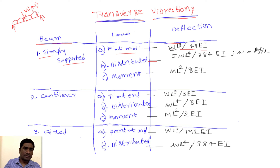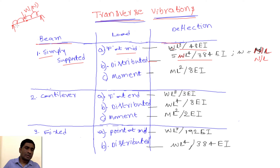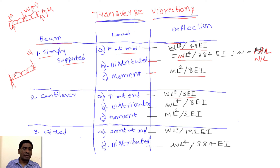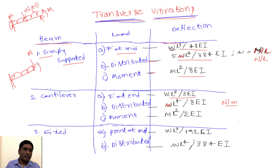When the load is distributed all along the length of a simply supported beam, there is another formula, where the small w is in Newton per unit length — that is why it is Newton per length. Then, when a moment is applied at the end of a simply supported beam, there is a corresponding deflection formula. For a cantilever beam, the first case is a point load W at the free end, with its own formula, and the second is a distributed load w (Newton per meter) all over the length.